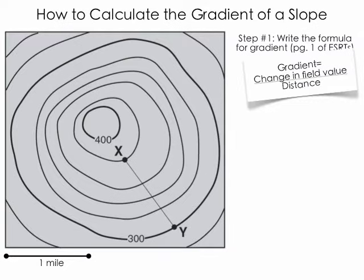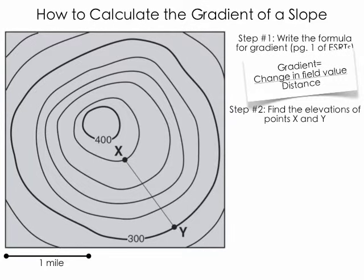So step one, of course, would be to find that change in field value. Now, if we start with point Y, it's fairly simple. The elevation of point Y is 300. You can see that clearly on the map, Y lies right along the 300 index contour.